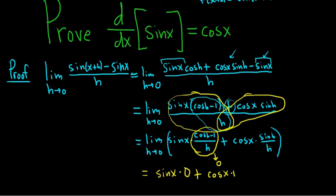Plus cosine x times 1. That's because this limit here approaches 1. One of those special limits. You usually learn this in a calc 1 course before you do derivatives. So you just end up with cosine x.